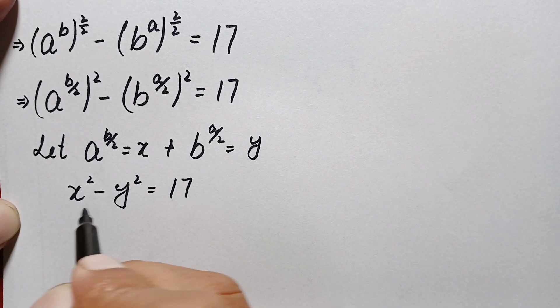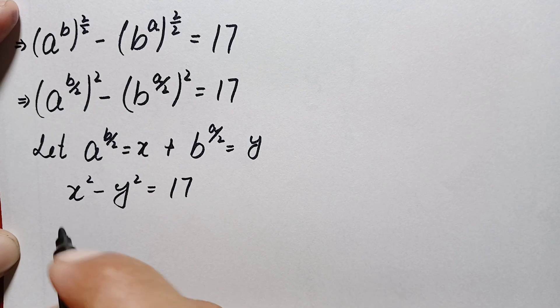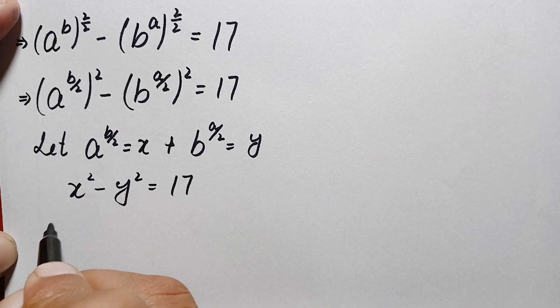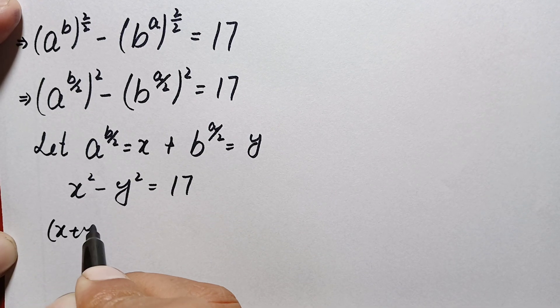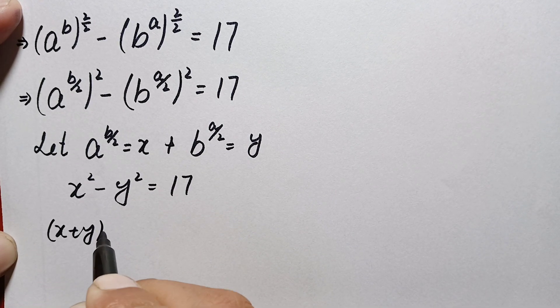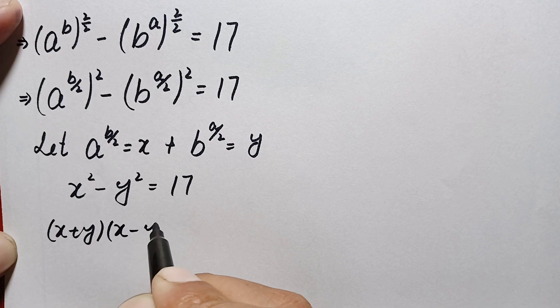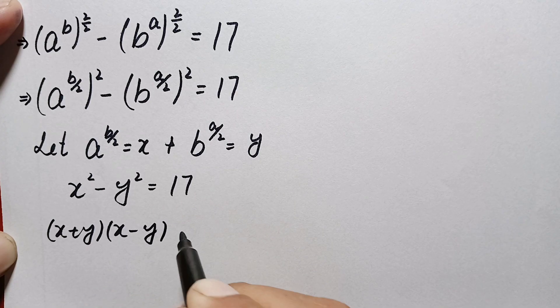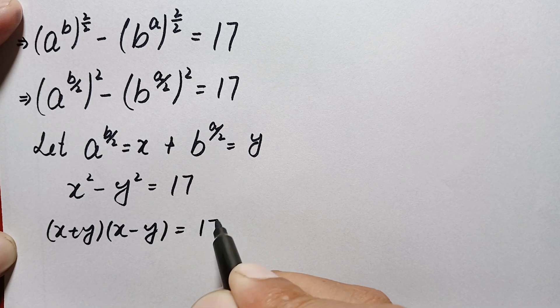Now this is the algebraic identity for a squared minus b squared. Applying the difference of squares, this becomes (x + y)(x − y) = 17.